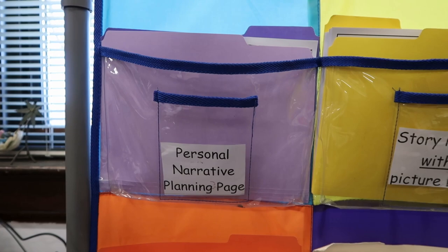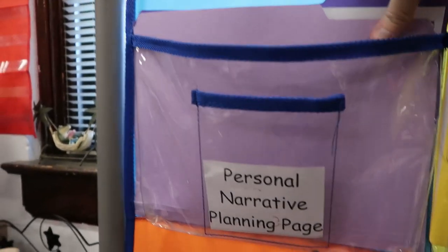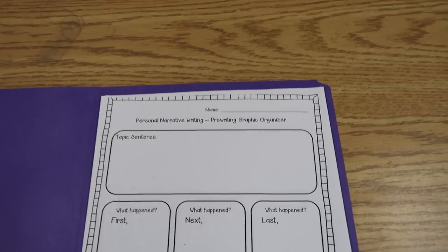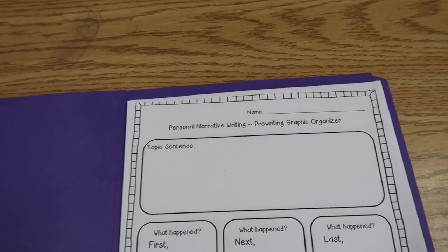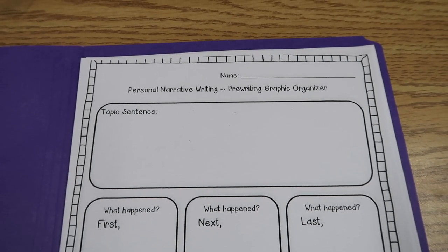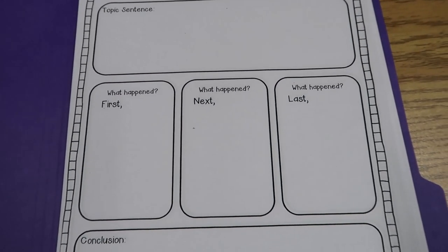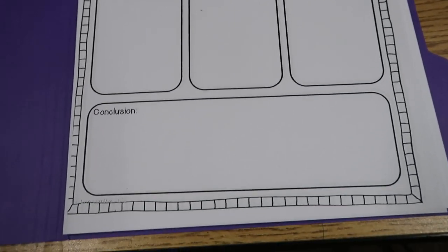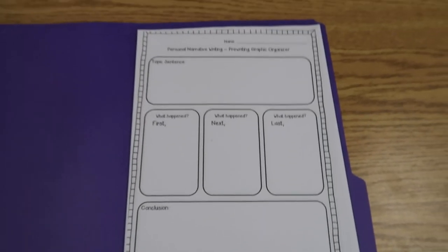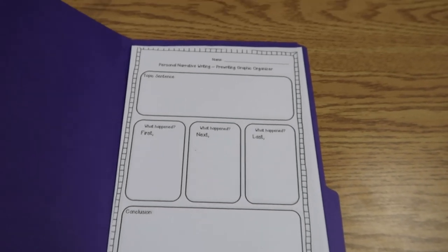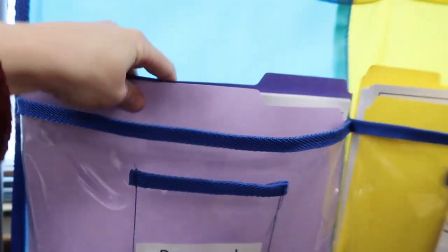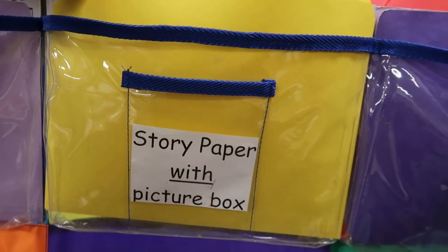Starting up here, this is the personal narrative planning page. If my students want to write a personal narrative, this is a planning page they can use to organize their thinking. It says topic sentence, what happened first, next, last, and then their conclusion. If they want to write a personal narrative, they can use that to organize their story. I just have them in file folders.